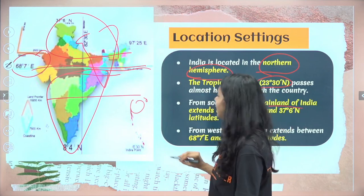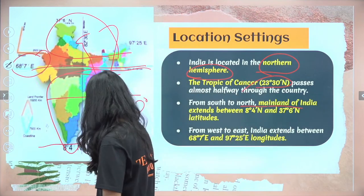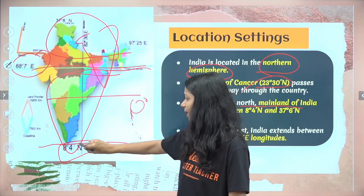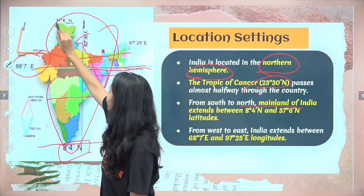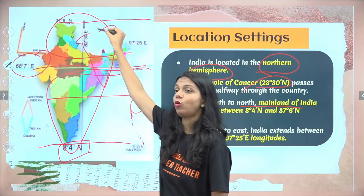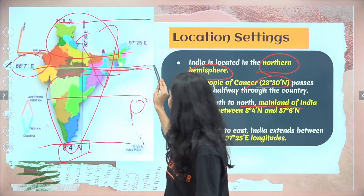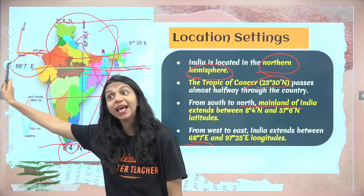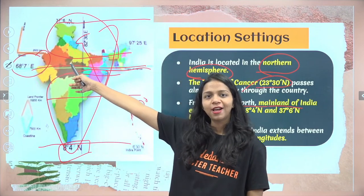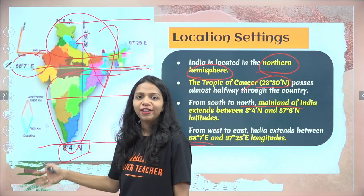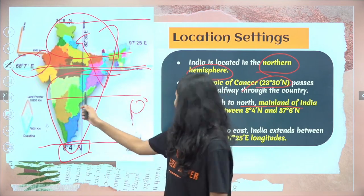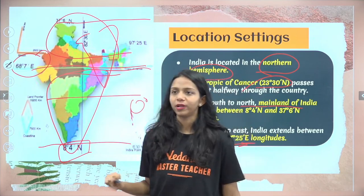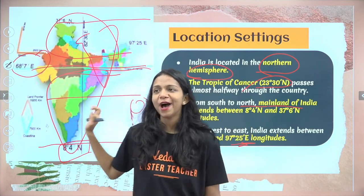From south to north, mainland India extends from 8 degrees 4 minutes north latitude — our southern tip — to 37 degrees 6 minutes north — our northernmost tip. From east to west, it is 68 degrees 7 minutes east longitude to 97 degrees 25 minutes east longitude.